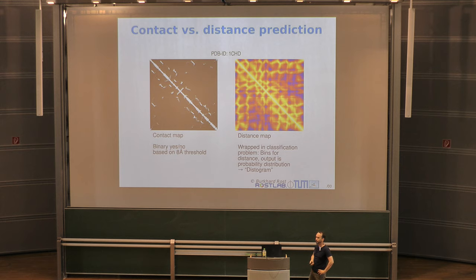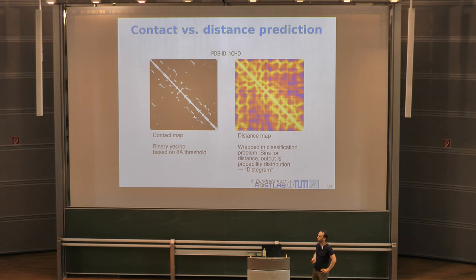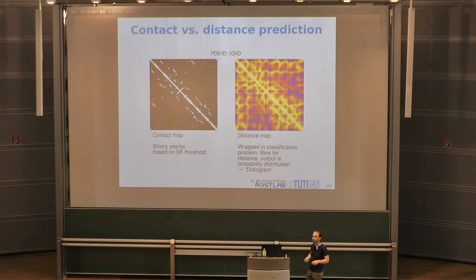Predicting distances is a bit tricky. Many people tried because it's more information-dense and gives better constraints for folding. The problem is it's not easy to predict them. Since distances are real-valued, most people tried regression and it didn't quite work — contact prediction worked much better, which is why it was the official category in CASP. What people lately tried instead is to frame this as a classification problem, not inferring the actual distances but binning them — for example, bins of 0–2 Ångström, 2–4 Ångström, and so on, up to perhaps 20 bins.